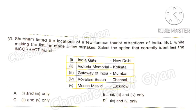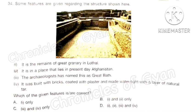Question 33: Shubham stated the locations of a few famous tourist attractions of India, but he made a few mistakes. The incorrect matches are: Kovalam Beach is in Kerala, and Mecca Masjid is in Hyderabad. So the correct answer is option D: statements 4 and 5 are the incorrect matches.